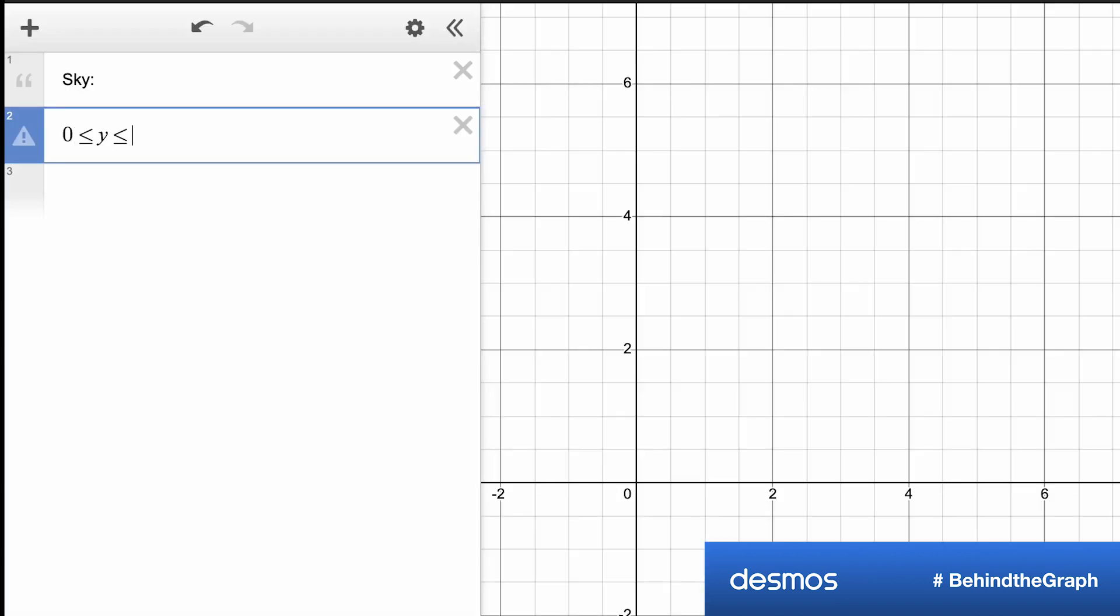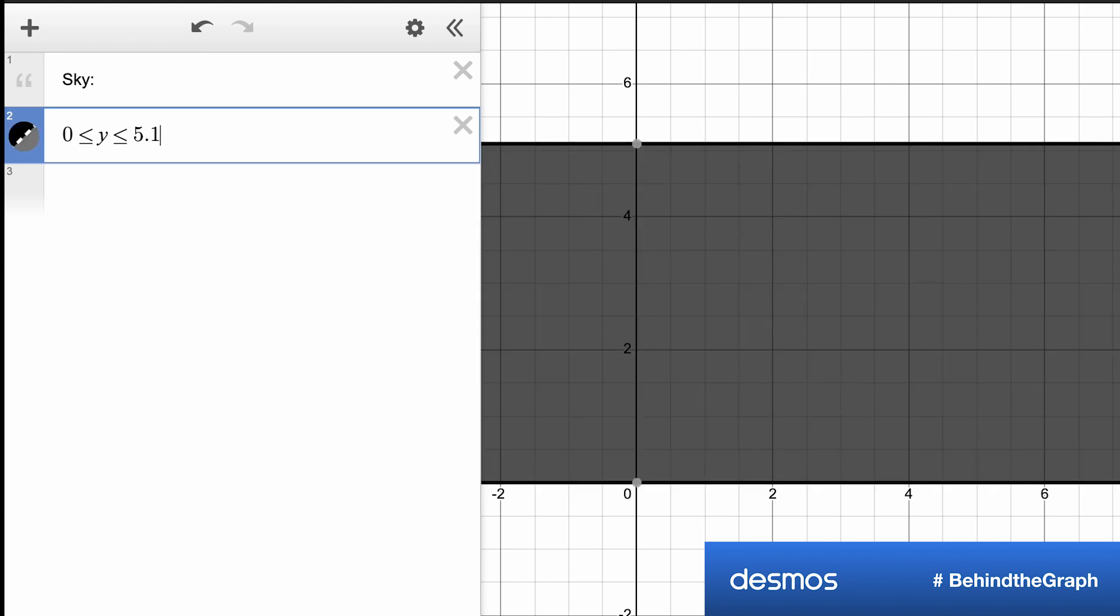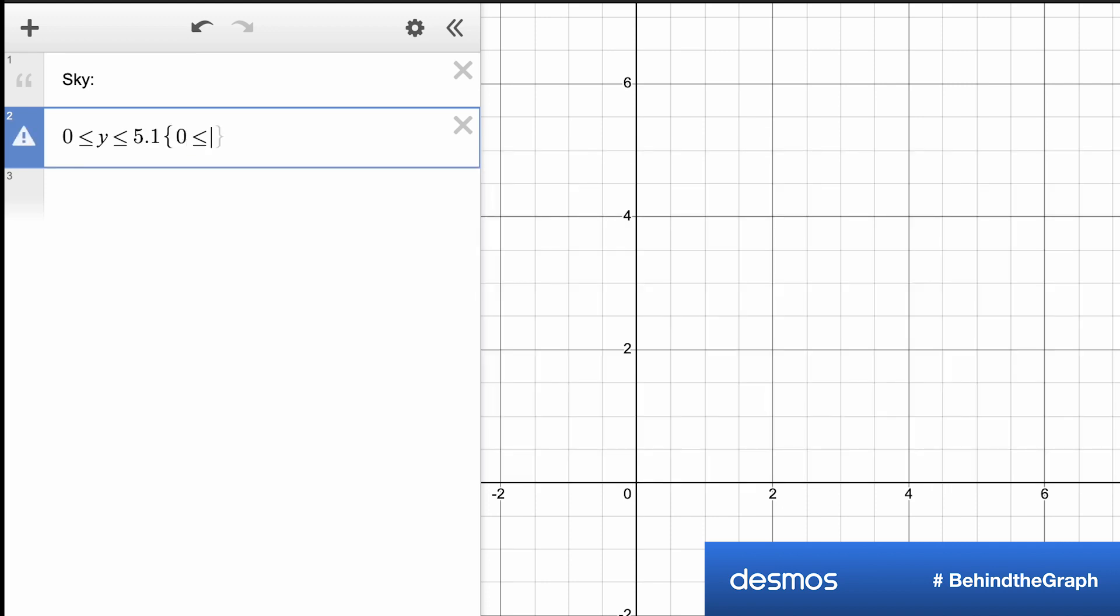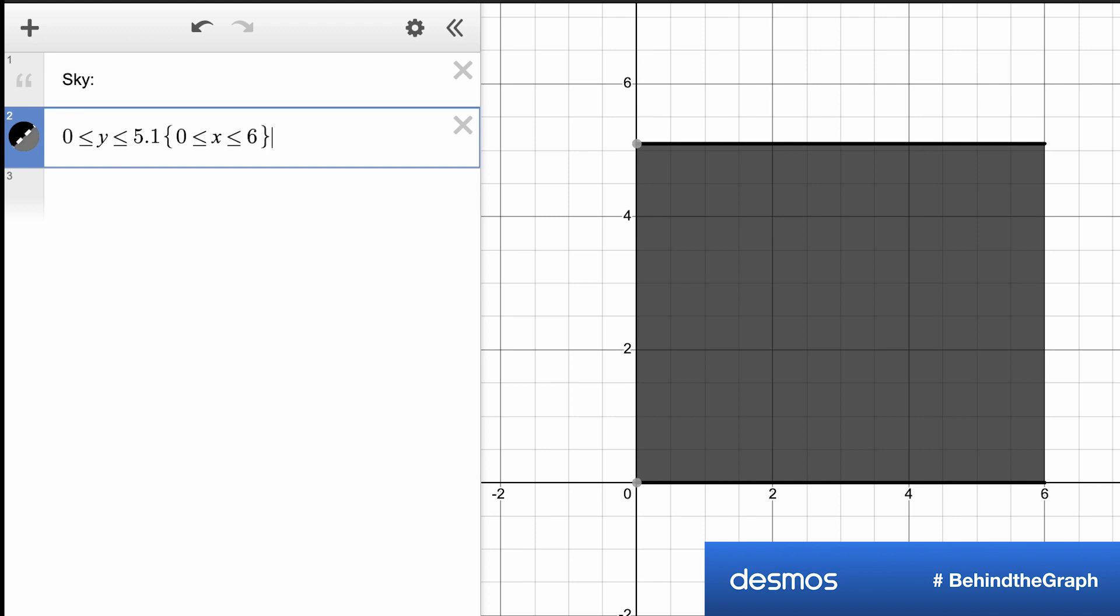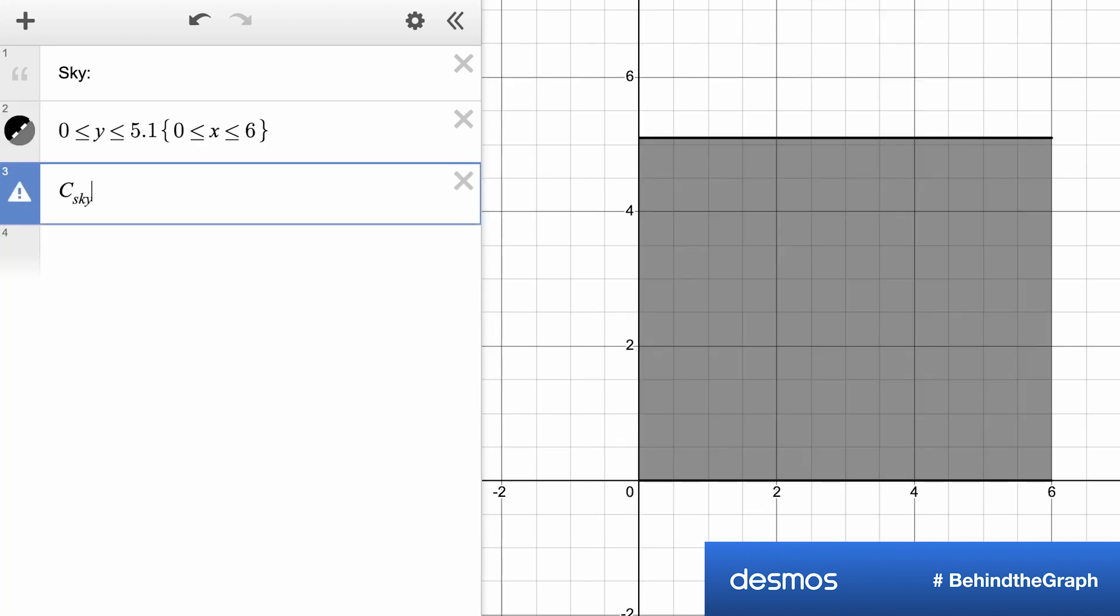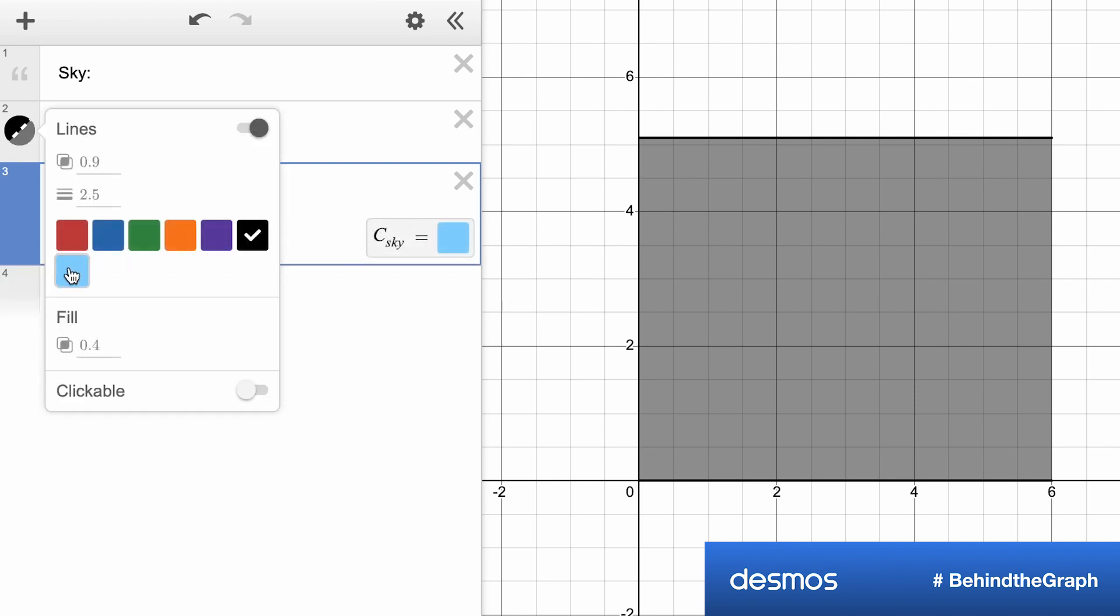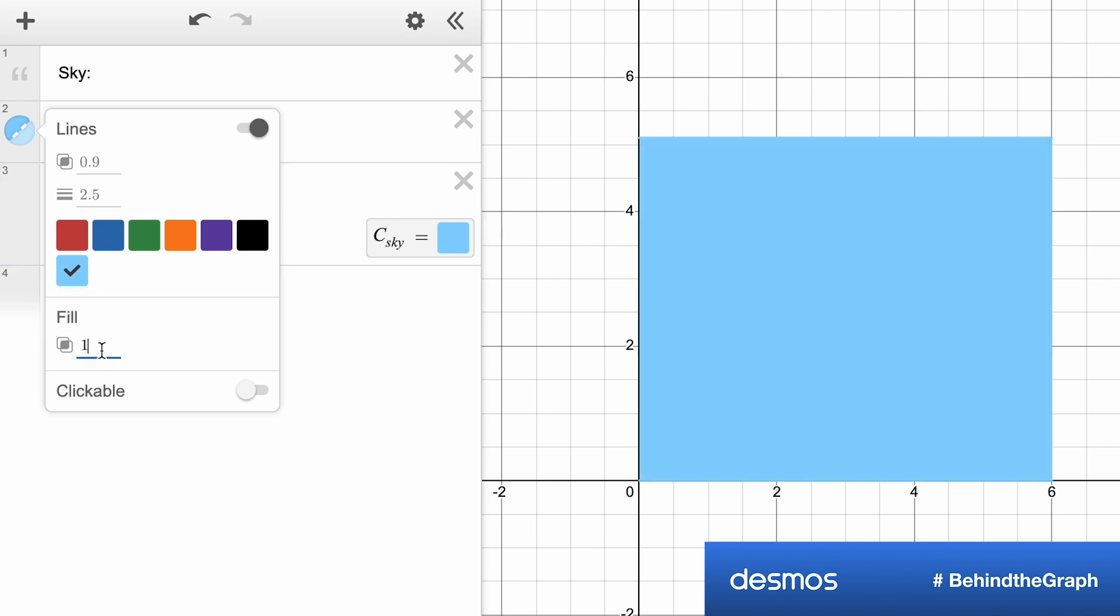So the first thing we'll do, we'll get ourselves just a solid rectangular background. We'll use a couple inequalities, a Y inequality to shade up and down, bounded with some curly brackets by an X inequality side to side. Now to change the color, I went through the original graph, found the RGB values that they used to get that custom color. I can change that, set the fill opacity to 1 to get a nice solid background.